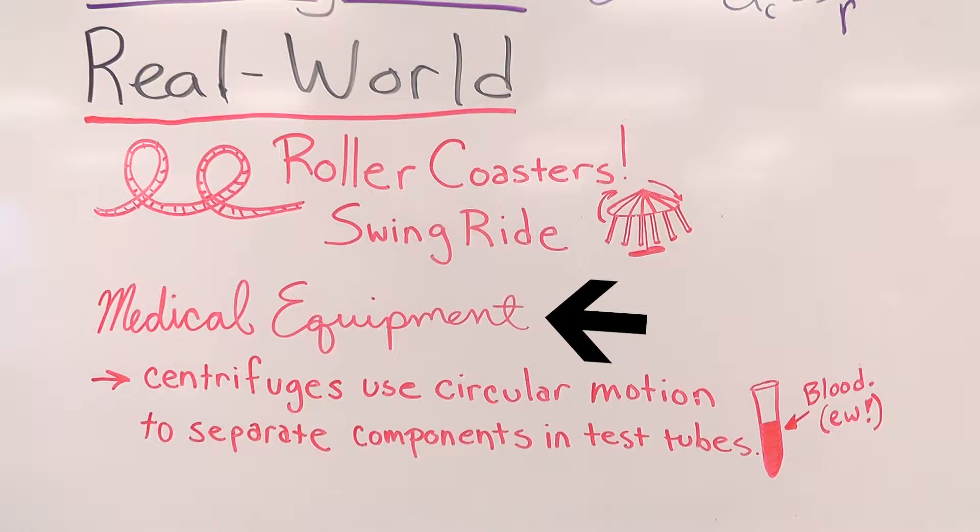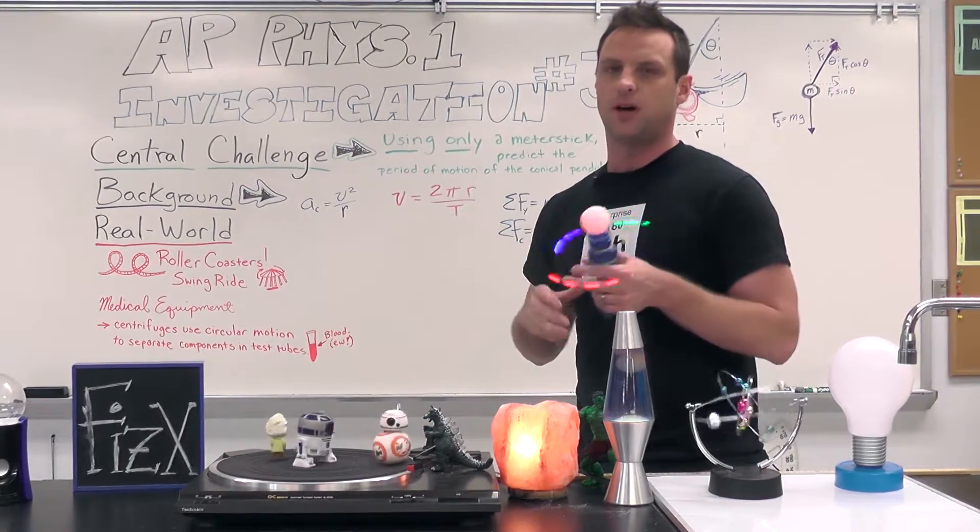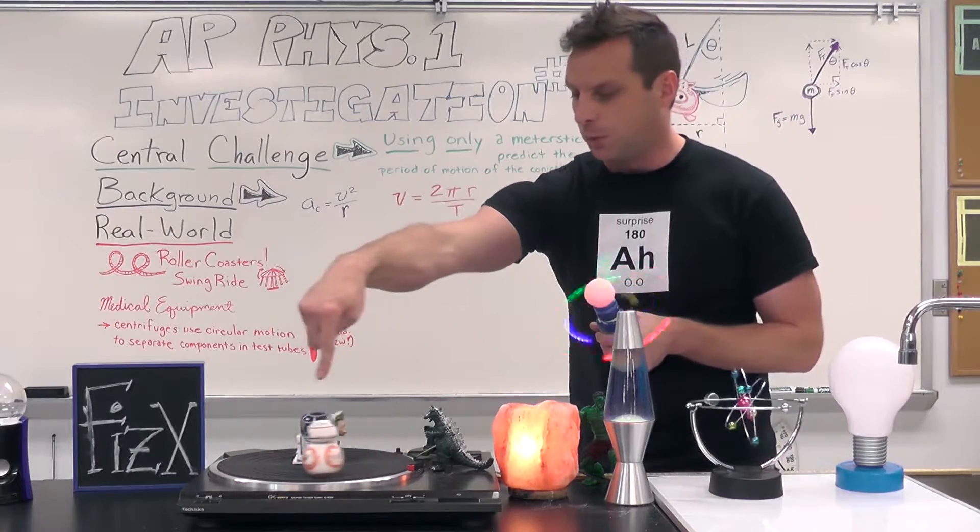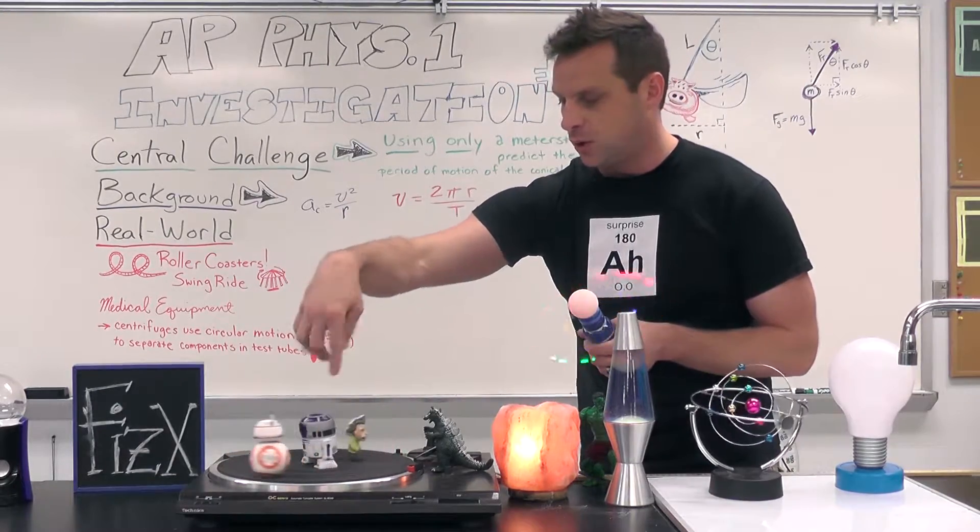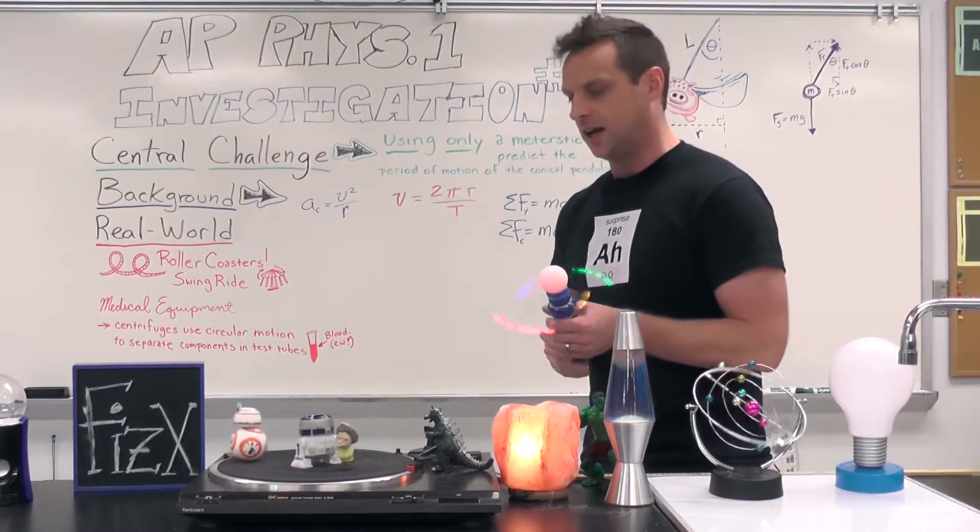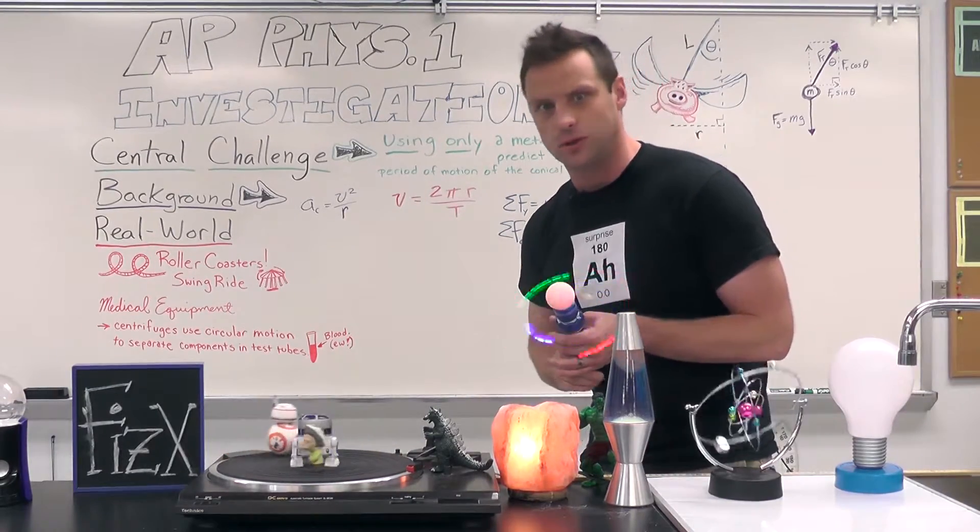In medical equipment though, we've got centrifuges, and centrifuges are going to spin test tubes around really quickly and it's going to separate blood from plasma in the centrifuge. And then you've also got little turntables, my little BB-8 and R2-D2, and we'll talk in class about comparing their velocities in an angular and a tangential kind of way.